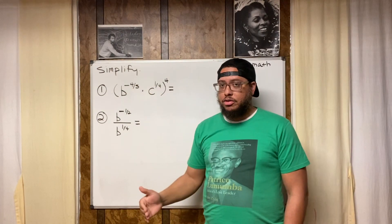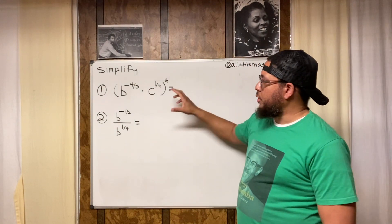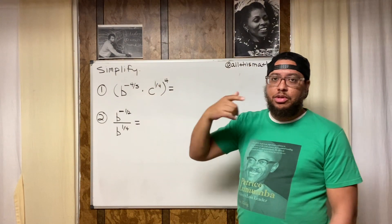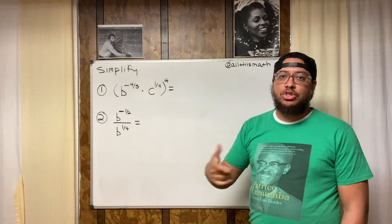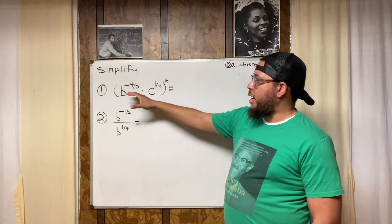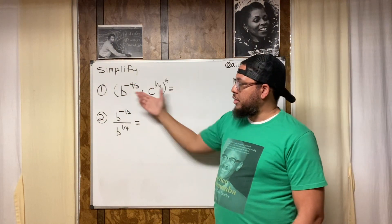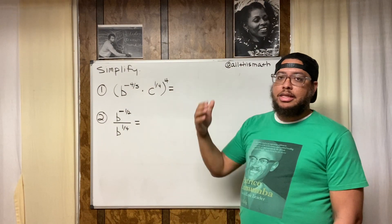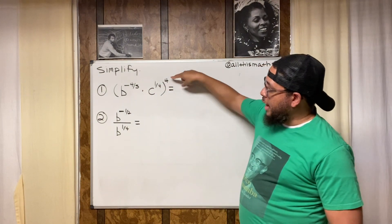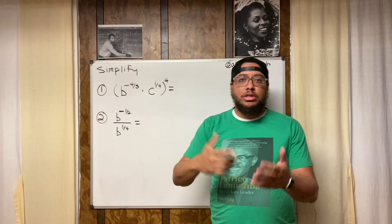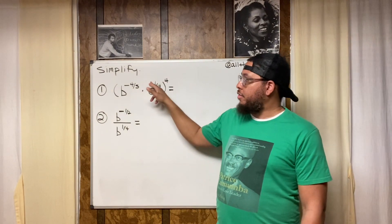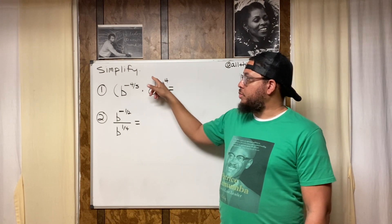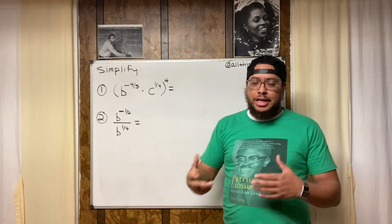One thing you can do is use the power of a power rule — I think of it as the distributive property for exponents, or the distributive exponent property. When you have terms inside parentheses that have their own exponents, and there's an exponent outside the parentheses, you multiply the exponent outside by every exponent inside. Even if no exponent is written, that means the exponent is a one.